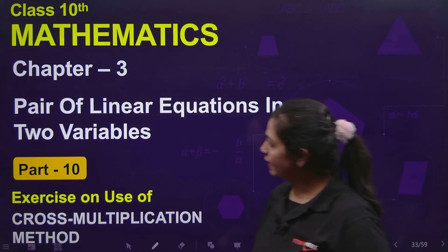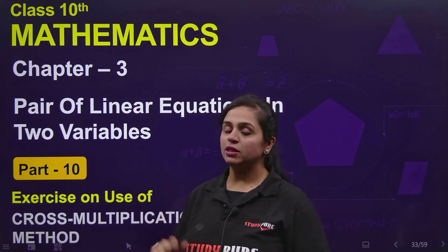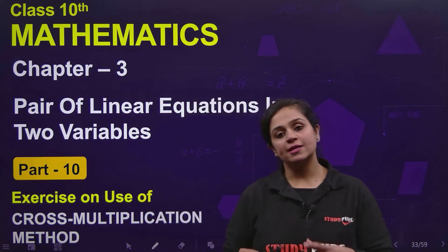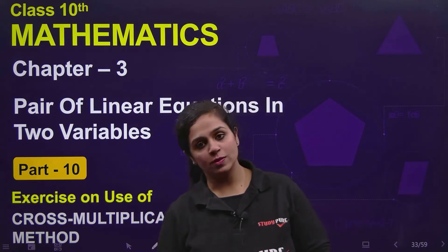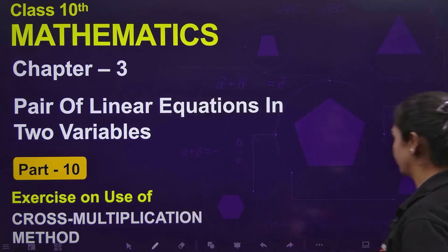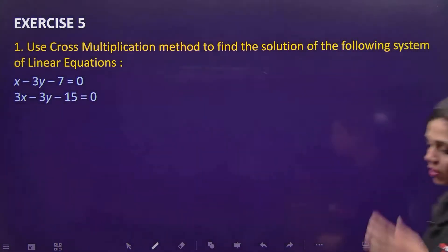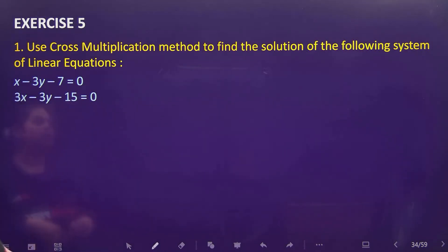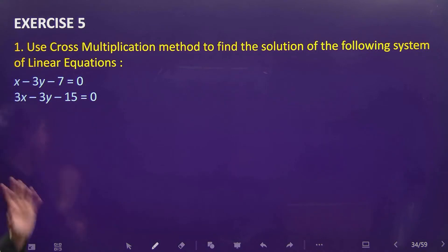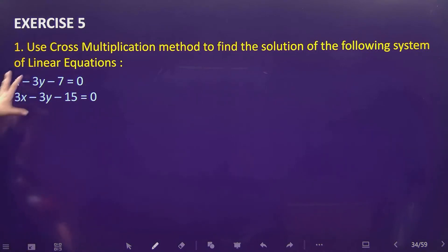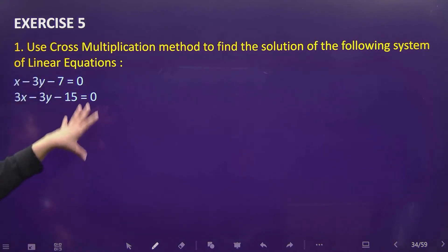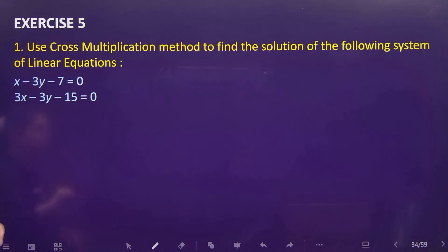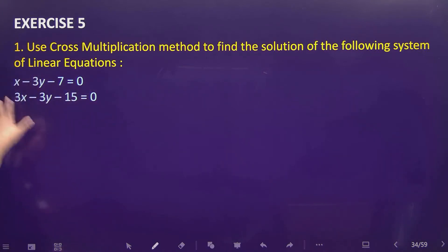This is Part 10 of the chapter on linear equations. We are on Exercise A questions and will be using the cross multiplication method. The question says: use the cross multiplication method to find the solution of the following system of linear equations. First, we will write it in general form.